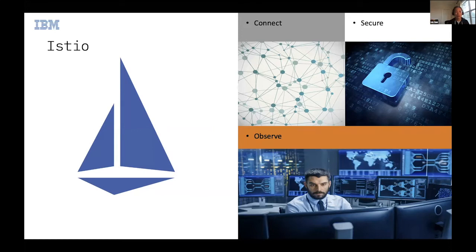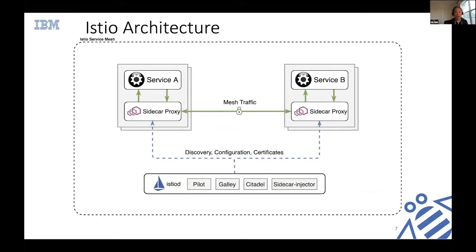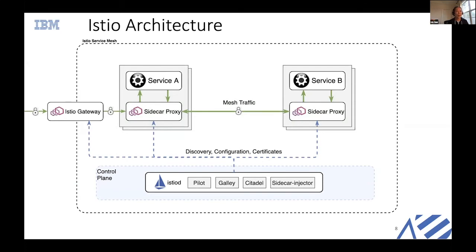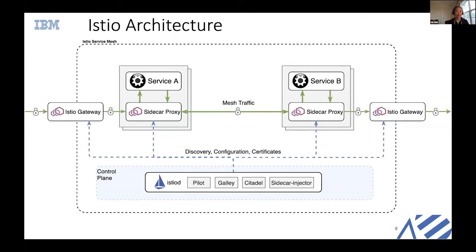Istio, same as service mesh architecture, has control plane and data plane components. It has a sidecar proxy — we use Envoy — to help mediate traffic among services. Istio used to have multiple control plane components, but we recently consolidated into one single component called Istiod, where the D stands for daemon. Istio also provides inbound traffic control through Istio Ingress Gateway and outbound traffic control through Istio Egress Gateway.